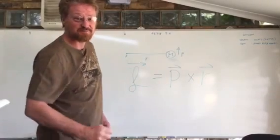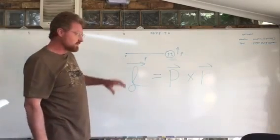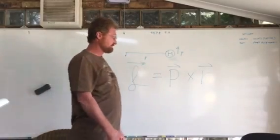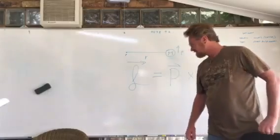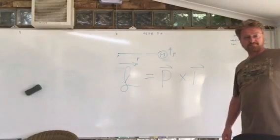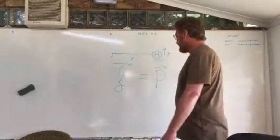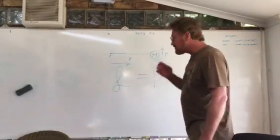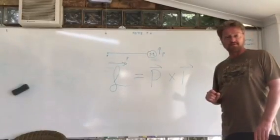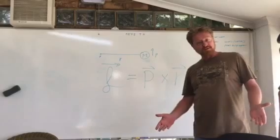And here comes the big question. If that is the scenario, what will happen to the angular momentum when we change the radius? It's going to change, right? It's obvious. Therefore, angular momentum will not be conserved when we change the radius, which means that the laws of physics are wrong and they need to be updated.